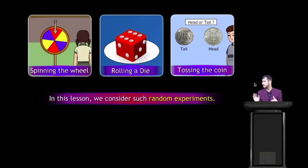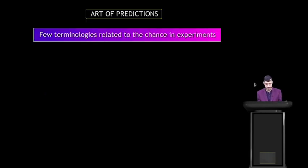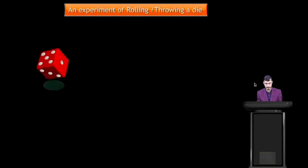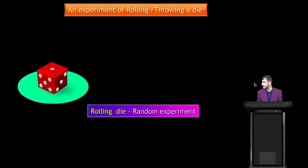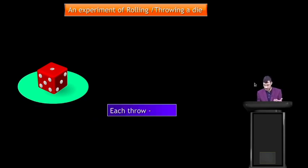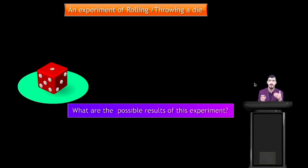Today we will learn about random experiments and much more — a few terminology related to chance in experiments. An experiment of rolling or throwing a die has 6 possible results, so rolling a die is a random experiment. Each throw means one trial here.